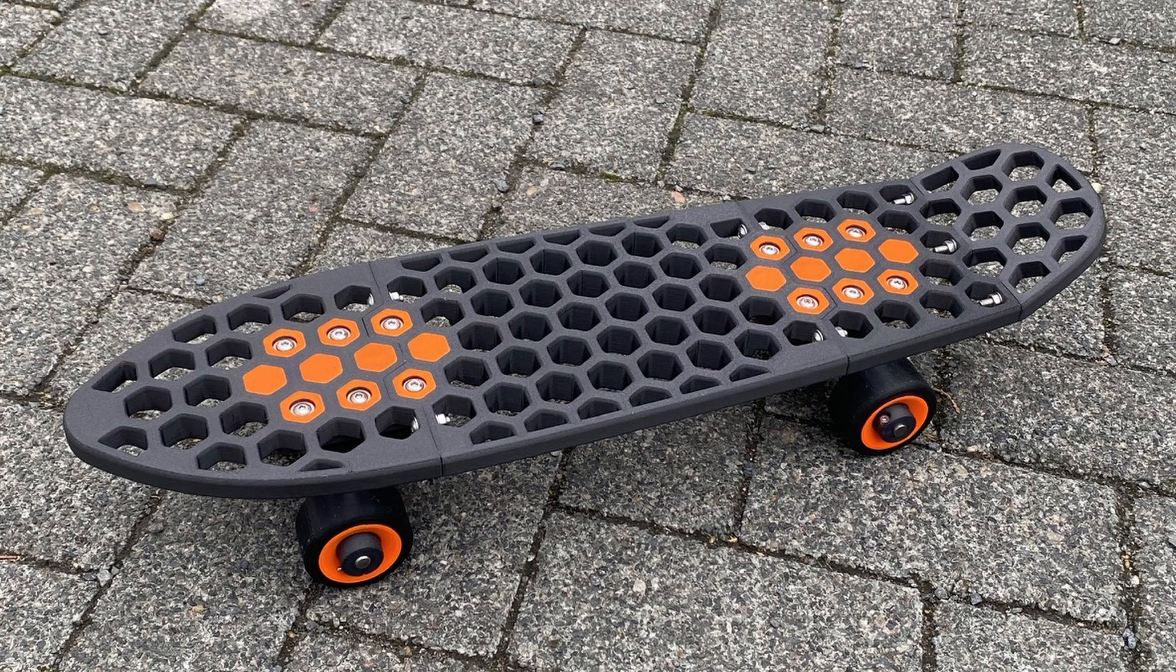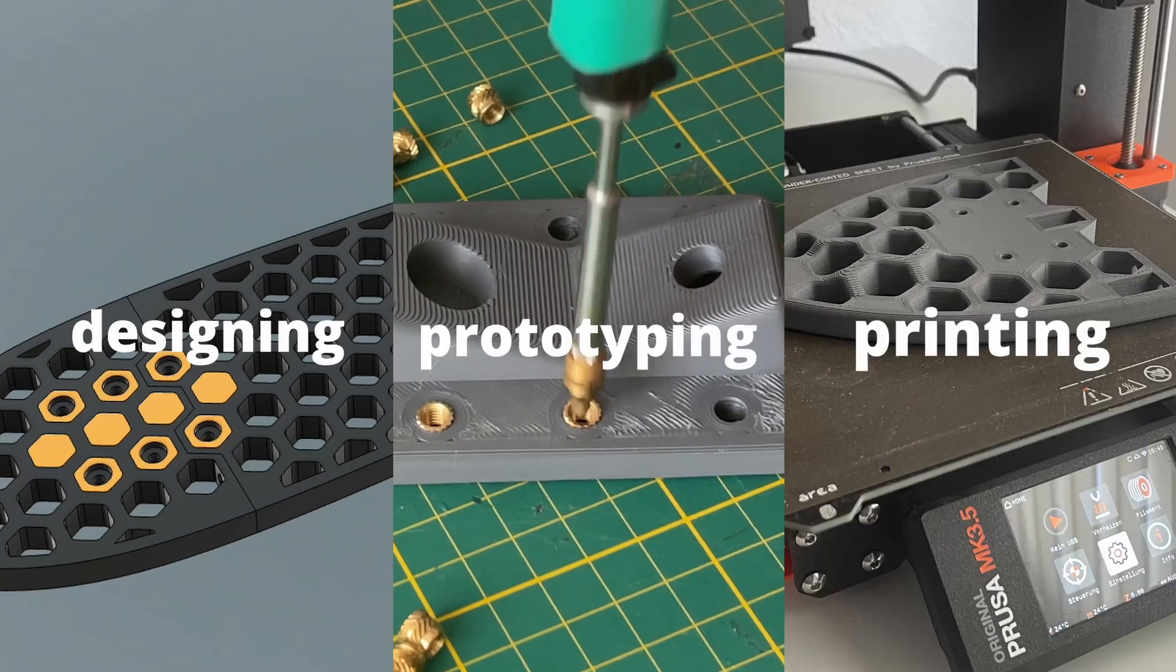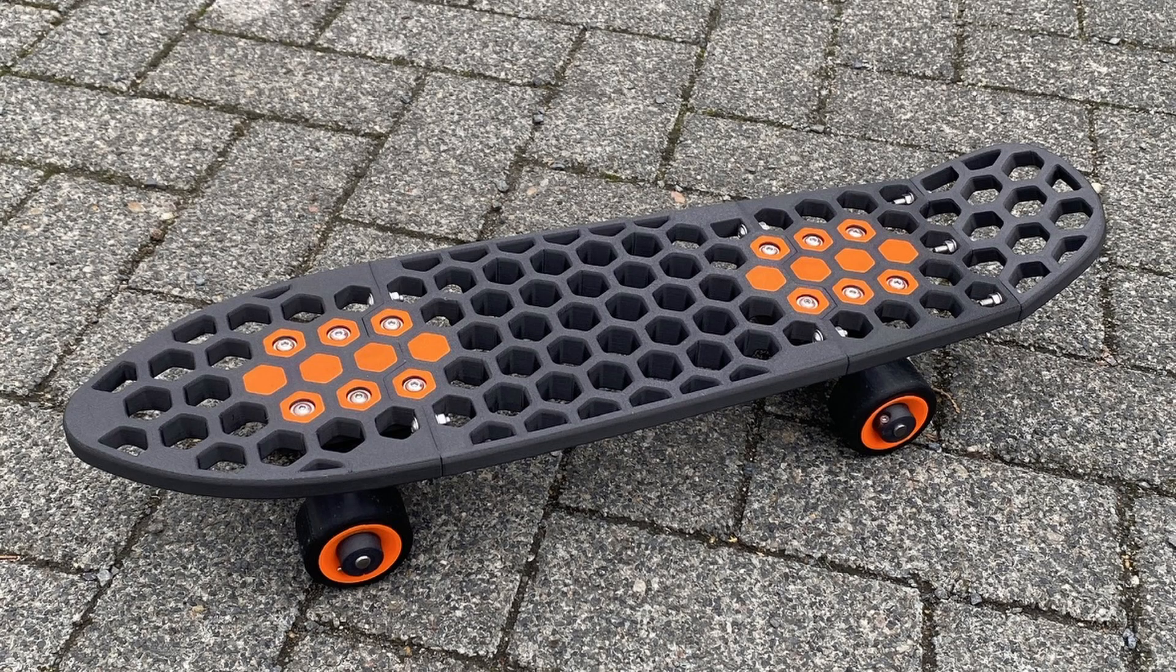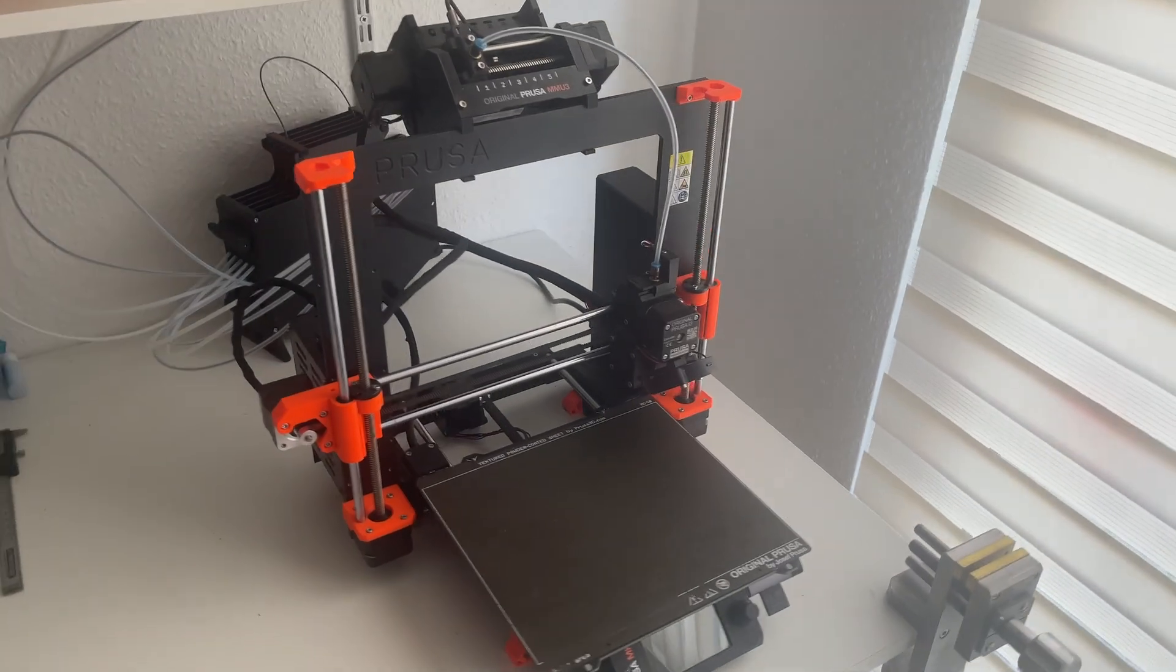For the last 3 years I have been designing, prototyping and printing countless hours. But there is a problem: how do you 3D print a skateboard that is way bigger than a normal 3D printer?